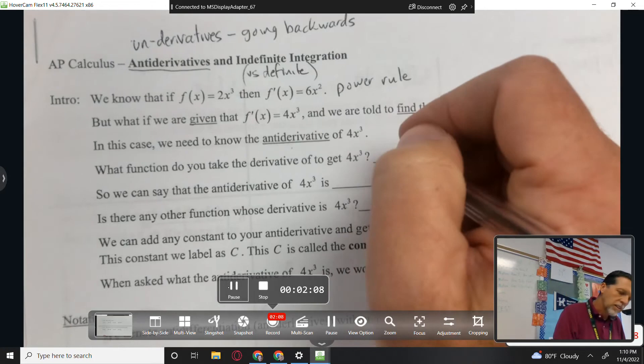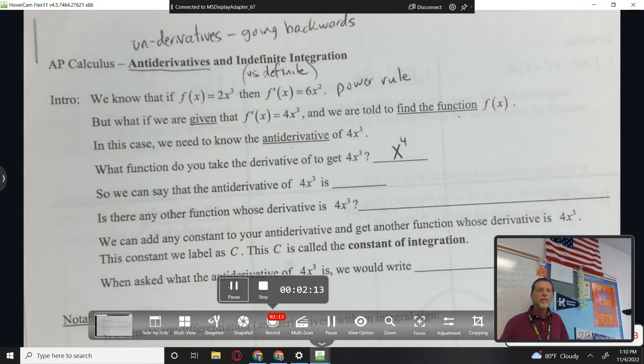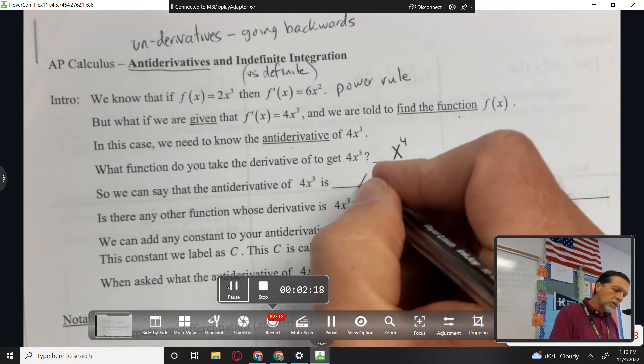x to the fourth. Okay, so a simple one you can think about and figure out. We'll talk more rules later. So we can say that the antiderivative for x cubed is x to the fourth.